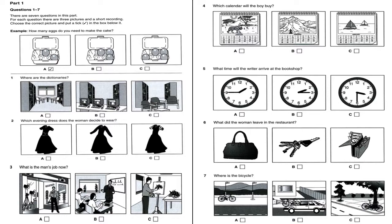Now listen again. As this is your first visit to the library, I'll show you round. Shelves are clearly labelled according to subject. Most books you may take home with you, but some, such as foreign language dictionaries, must stay in the library. These can be found over there, behind the computers, and it's best if you take them to the desks by the window. Or you can use these armchairs if you prefer to sit somewhere more comfortable.